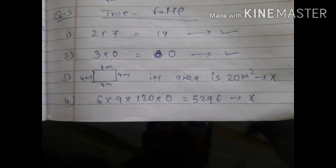Yes, the statement is false because for area we multiply side by side, it will be sixteen. So the statement is false. Fourth: six multiply nine multiply 120 multiply zero equals 5296. Yes, this statement is also false because there's a multiply zero, so all of this will become zero. So the statement is false.